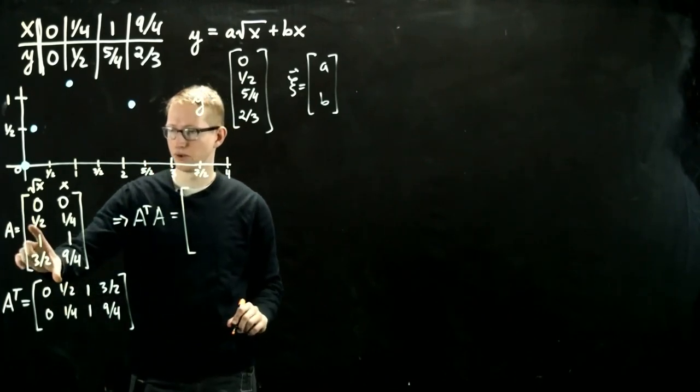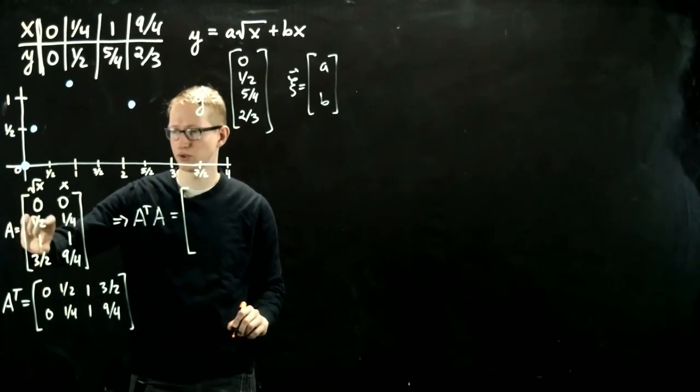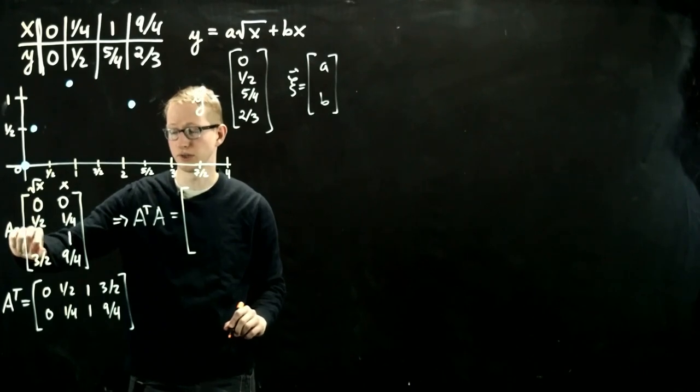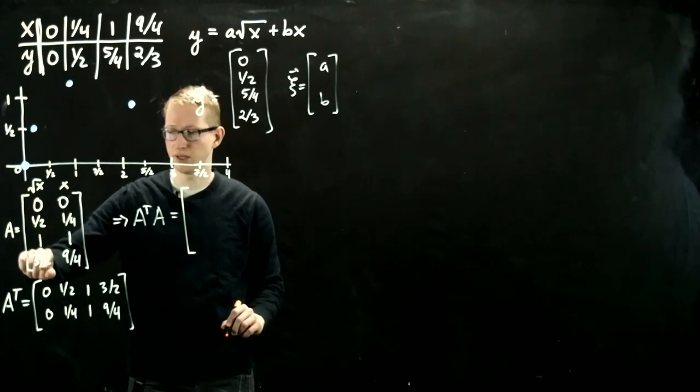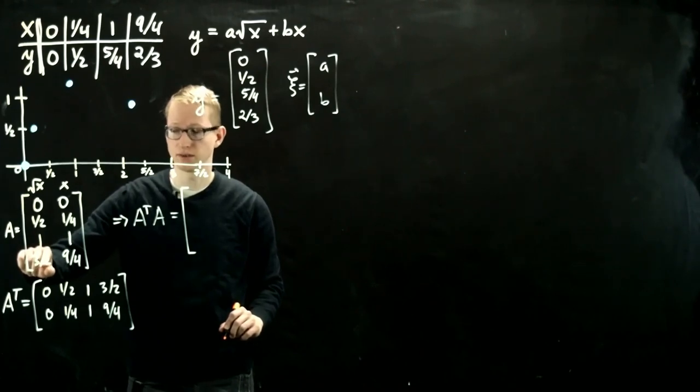And here we have, we're multiplying the first row with this first row, so essentially we're just taking the dot product of this vector with itself. It's a fourth plus 1, so that's 5 fourths, plus 9 fourths. That gives us 14 fourths, which is 7 halves.